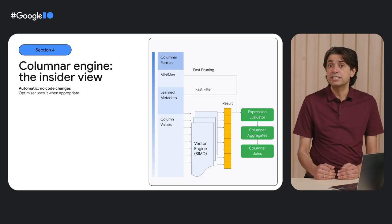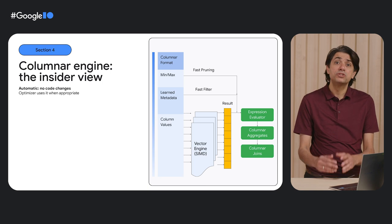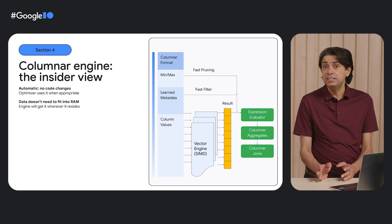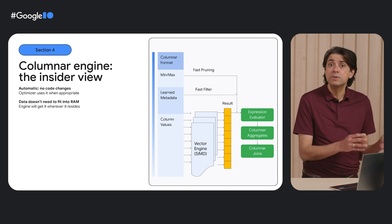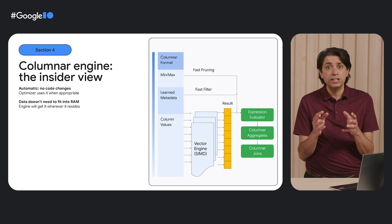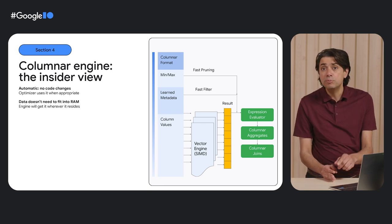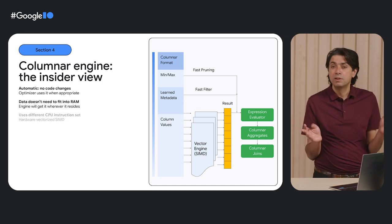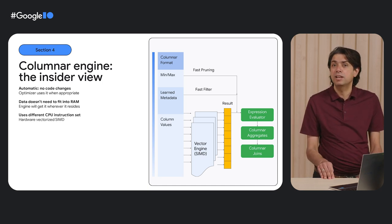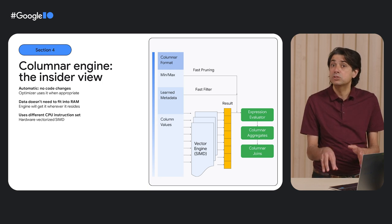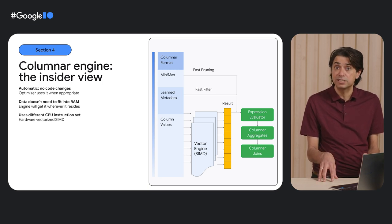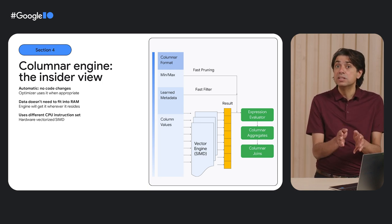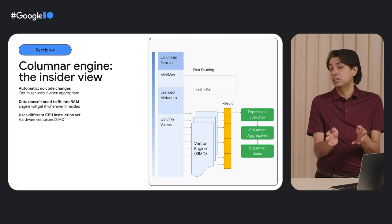We implemented the columnar engine as a Postgres extension, so it's transparent to your apps and they don't need any code changes to use it. The machine learning algorithms move the data between DRAM, the ultrafast cache, and storage depending on your usage pattern, giving you the performance of memory and the scale and economics of our system storage. Processors for a long time have been shipping with SIMD instruction sets, which makes vectorized operations go really fast. If these operations are executed against data stored in in-memory columns, we can speed up those operations by a couple of orders of magnitude.